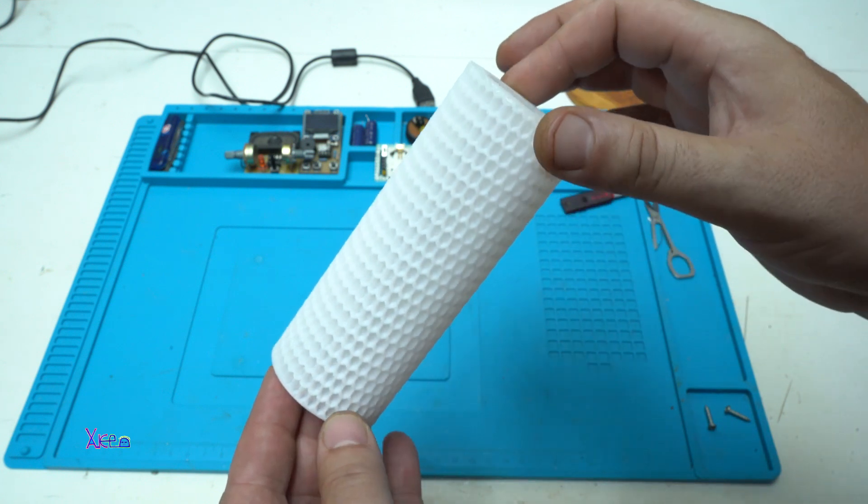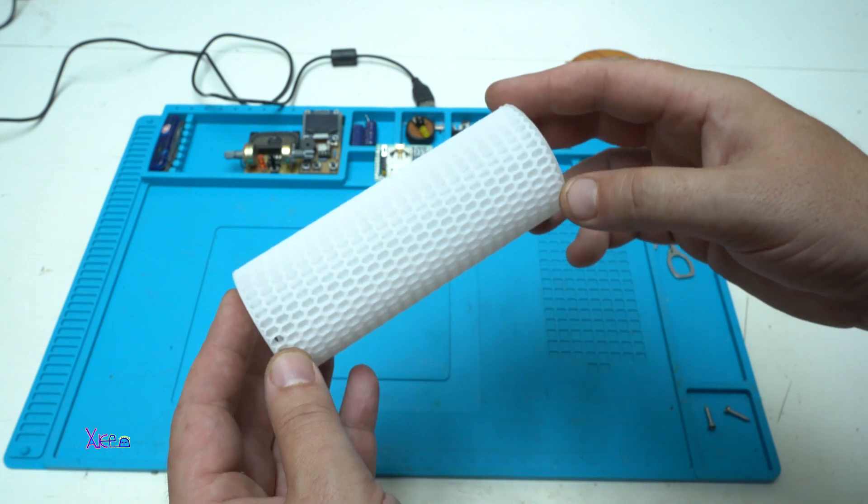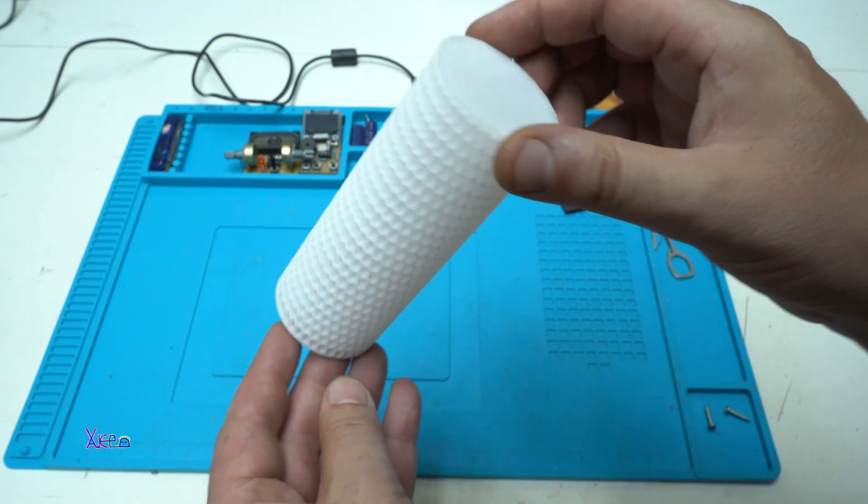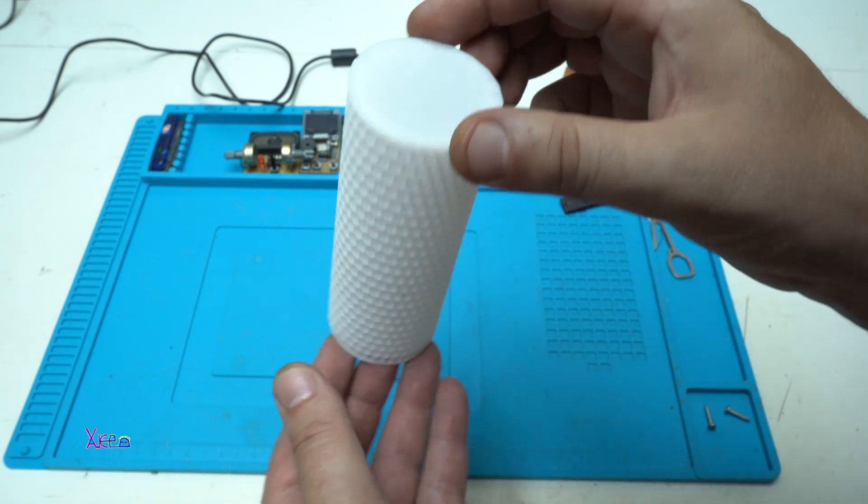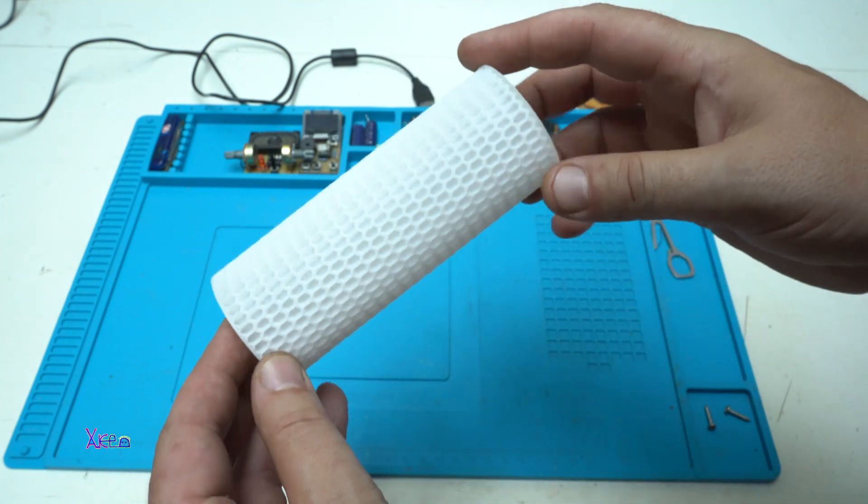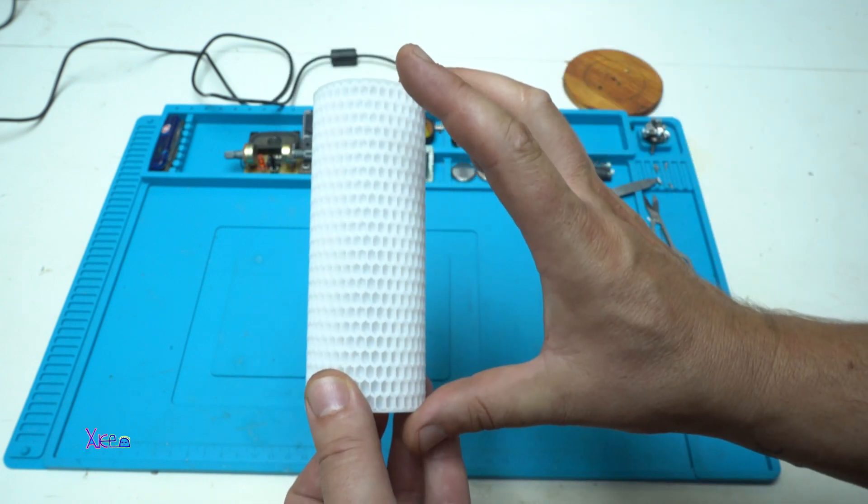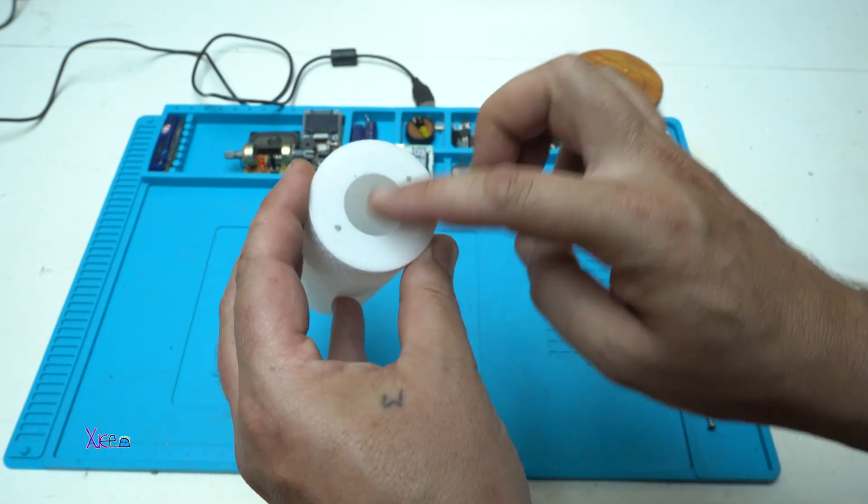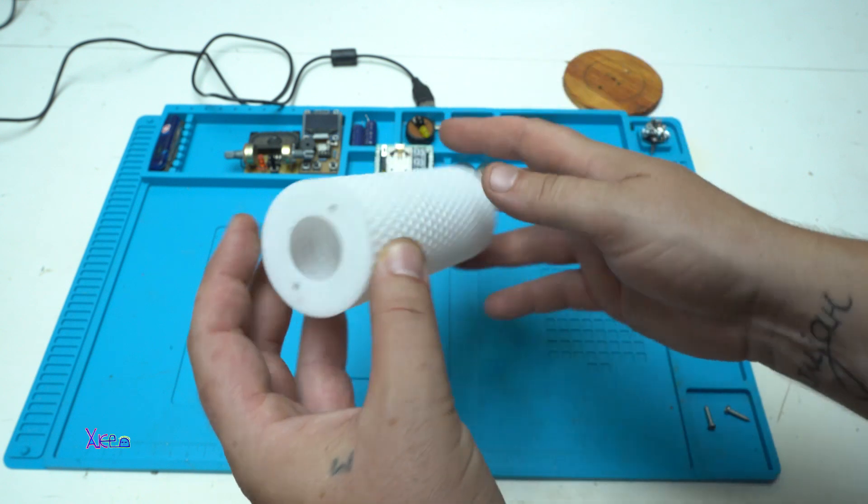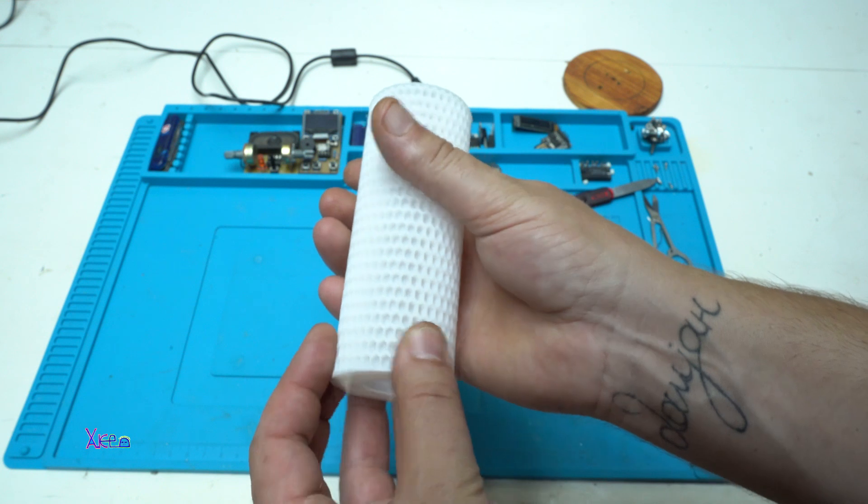After 3D printing the case for the LED lamp, here it is. A honey texture 3D printed lamp in white color. It took about 3 hours to print. It's 13 cm tall and the diameter is 5 cm, looking very nice and feels good.